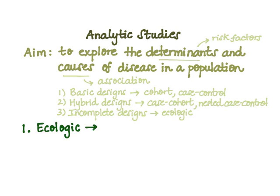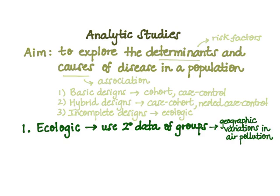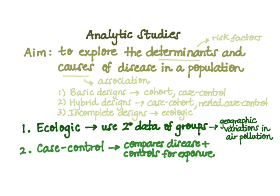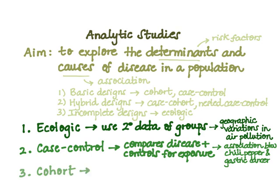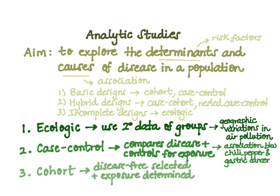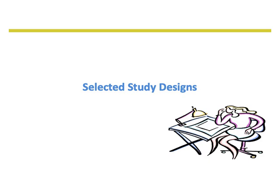Ecologic studies are defined as using secondary data where the unit of analysis is the group and not the individual. An example is geographic variations in air pollution and mortality within a specific region. Case-control studies compare persons with a disease to a control group to determine differences in exposure — for example, studying the association between chili pepper exposure and gastric cancer. Cohort studies are perhaps the most basic observational study, using disease-free individuals whose exposure status is determined and then followed over time — for example, smoking as the exposure and risk of acute myocardial infarction as the outcome.